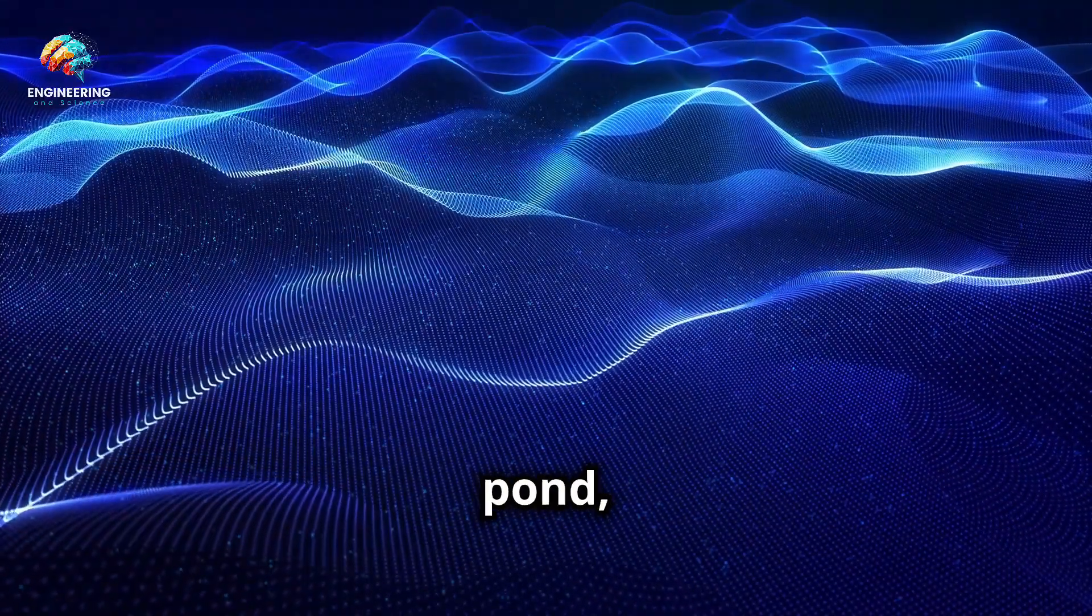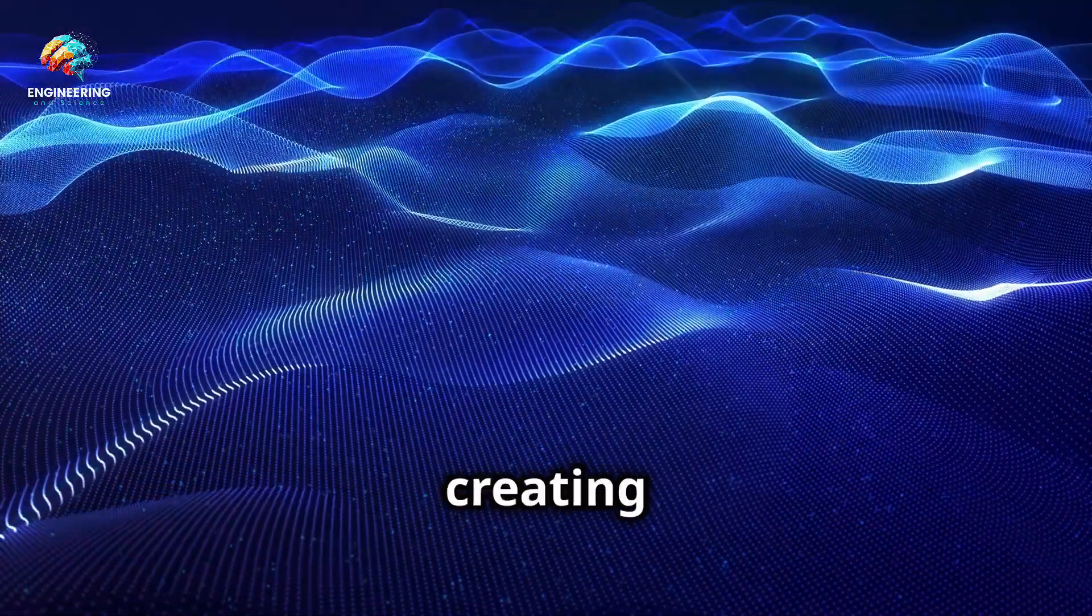Is light a wave, like a ripple on a pond, spreading out in all directions and creating patterns of interference?